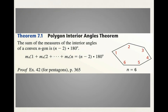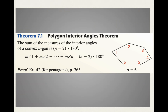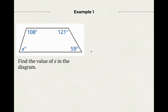That leads us to the polygon interior angles theorem — you've just sort of derived it by thinking through those examples. This theorem tells us that for any convex polygon, no matter how many sides and angles it has, the sum of the measures of the interior angles equals n minus two times 180. Why? Because n minus two is the number of triangles, and 180 is how many degrees each triangle has inside it.